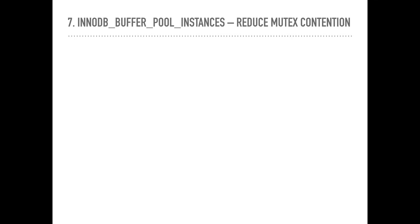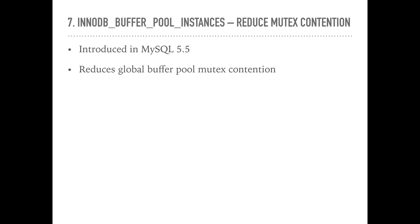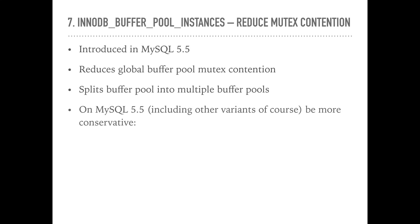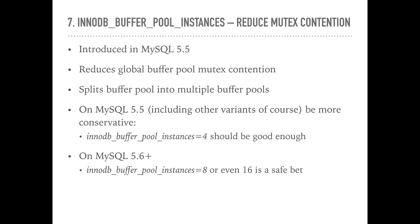InnoDB buffer pool instances: MySQL 5.5 introduced buffer pool instances as a means to reduce internal locking contention and improve MySQL scalability. In version 5.5 this was known to improve throughput to some degree only. However, MySQL 5.6 was a big step up — while in MySQL 5.5 you may want to be more conservative with innodb_buffer_pool_instances equals 4, on MySQL 5.6 and 5.7 you may go with 8 to 16 buffer pool instances. Obviously, do not expect this to make any difference to a single query — the difference will only show with highly concurrent workloads.